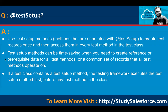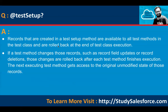Test setup methods can be time-saving when you need to create reference or prerequisite data for all test methods, or a common set of records that all test methods operate on. If a test class contains a test setup method, the testing framework executes the test setup method first before any test method in the class. Records created in the test setup method are available to all test methods and are rolled back at the end of test class execution.